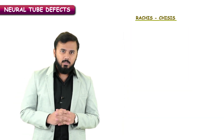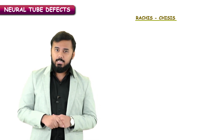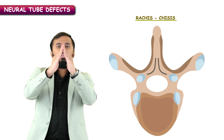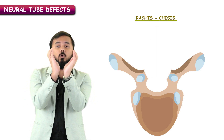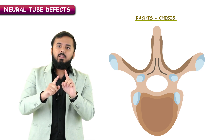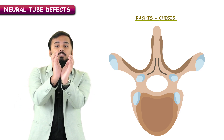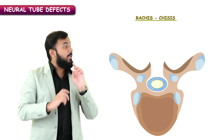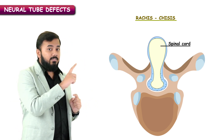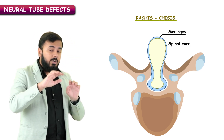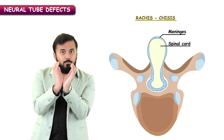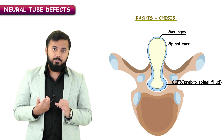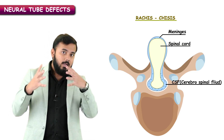The second important type is rachischisis, which has previously been asked in exams. You can see a vertebra here — it has a transverse process and a spinous process. The spinous process is formed by the fusion of the dorsal arch. If the dorsal arch is not formed, the vertebra is open. Through this open vertebra, not only the spinal cord but even the meninges are herniating outside. So in rachischisis you have: an open vertebra because the dorsal arch is not formed, a spinal cord protruding outside, and CSF leaking outside.